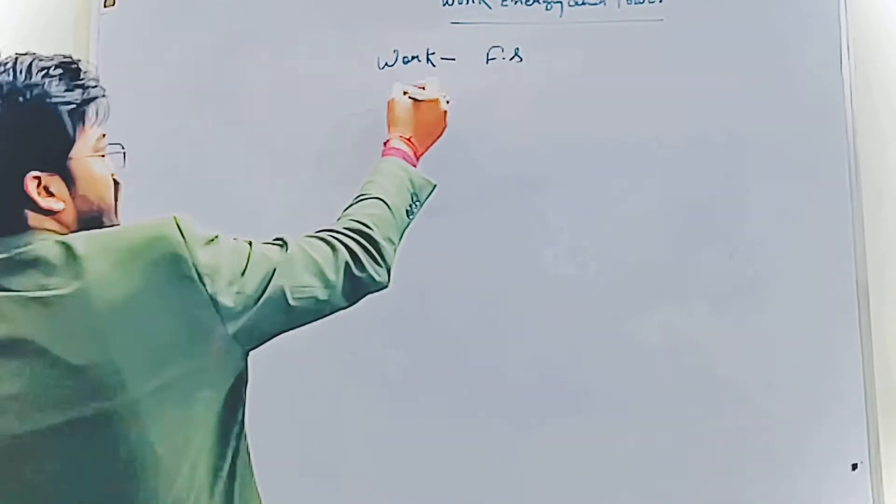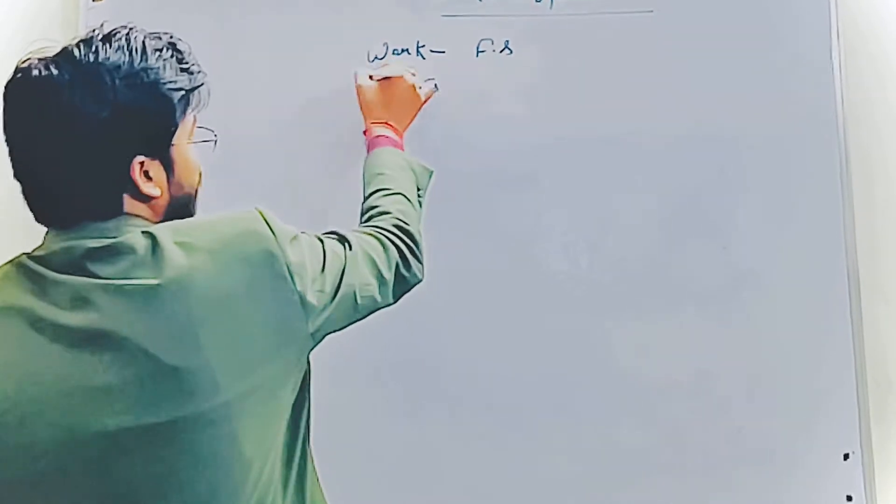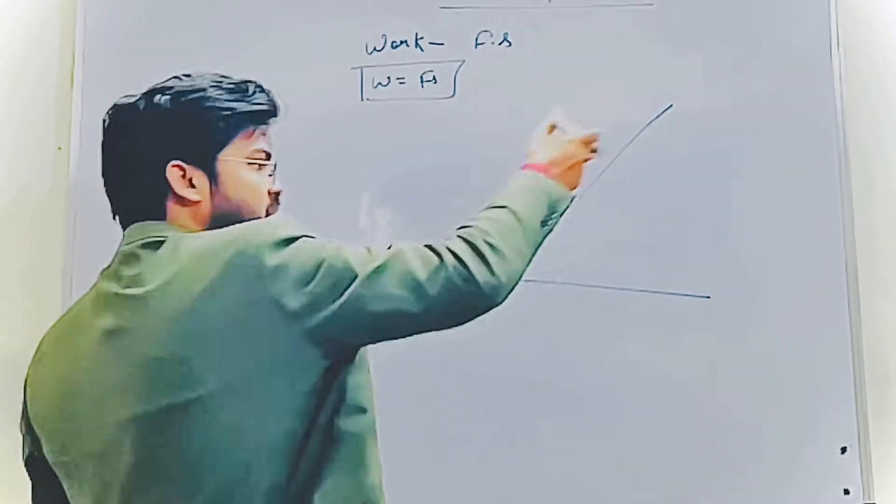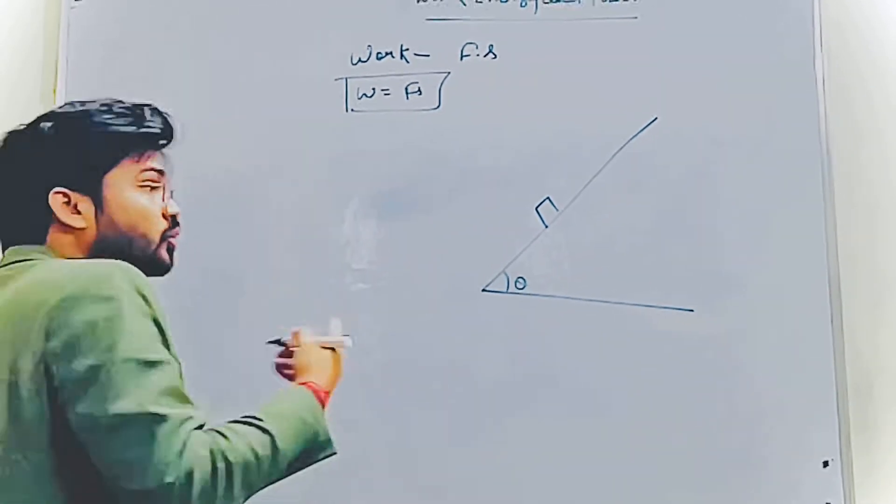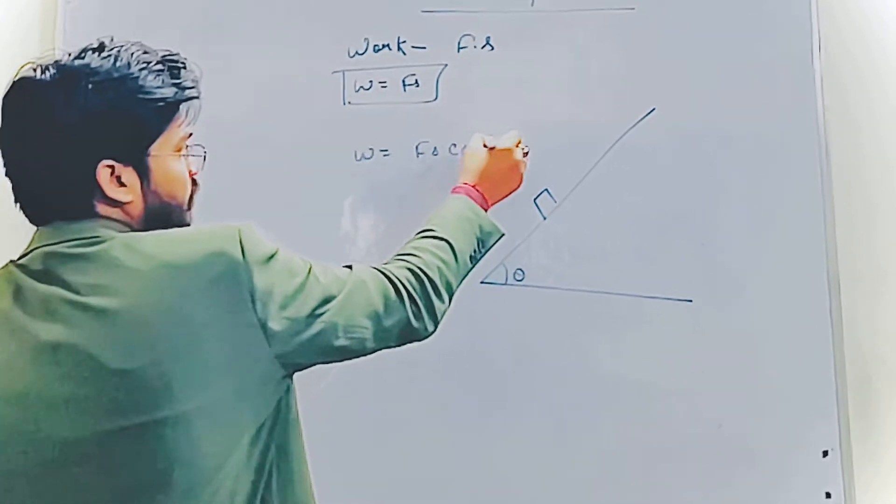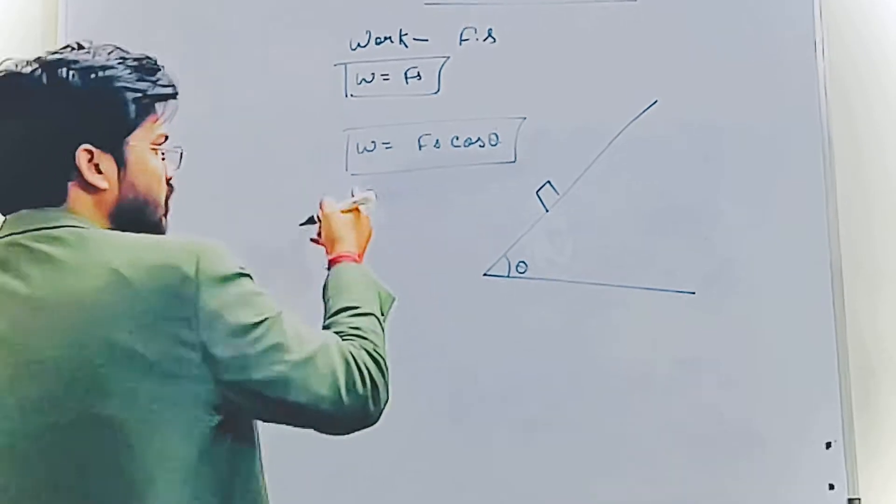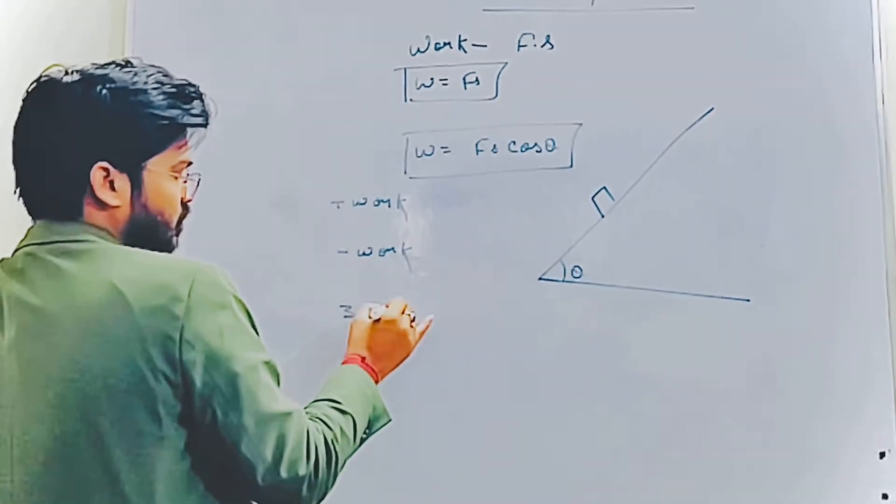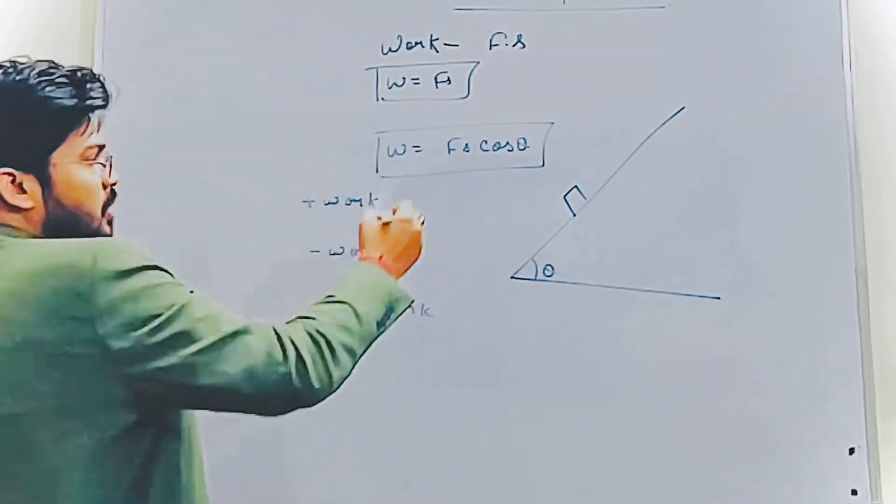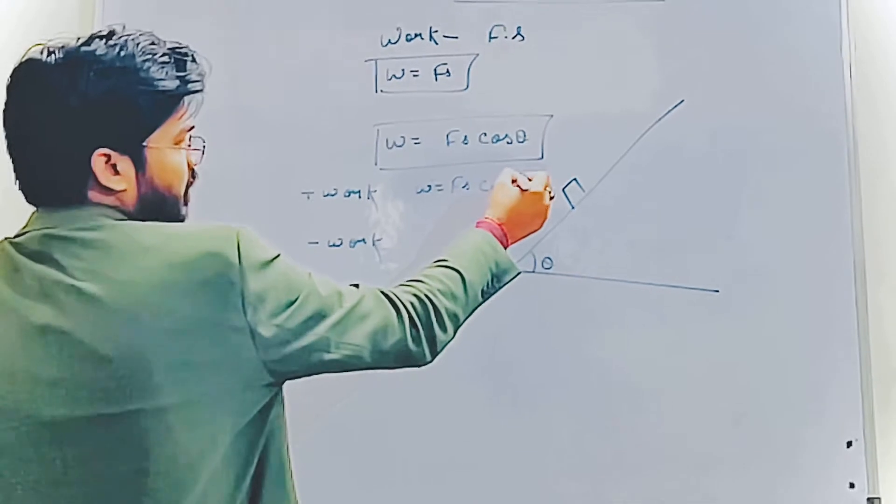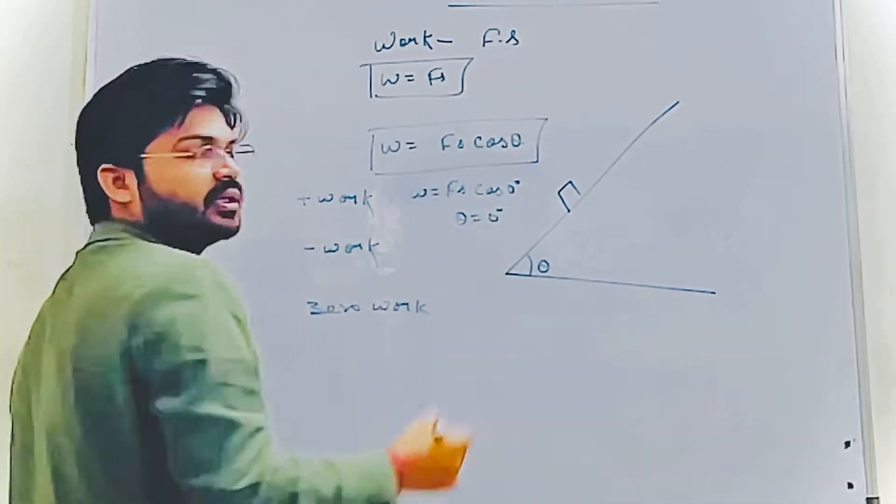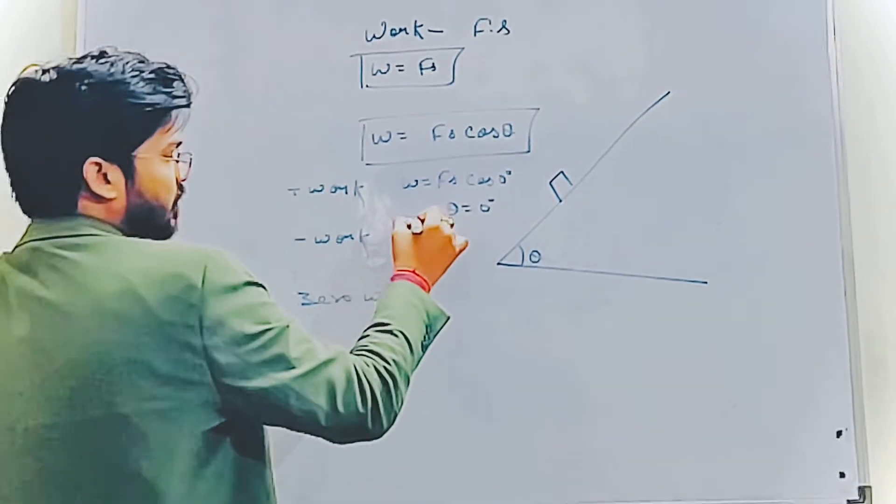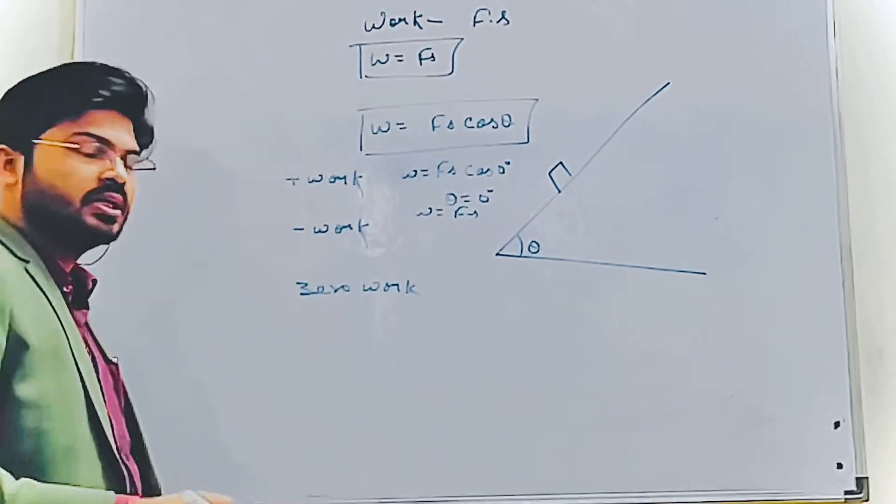So there are three types of work. The formula is W equals FS cosine theta. So there are three types of work: positive work, negative work, and zero work. Positive work occurs when W equals FS cos zero degrees. When theta is zero degrees, then work is said to be positive, because cos 0 equals 1. So W equals FS.